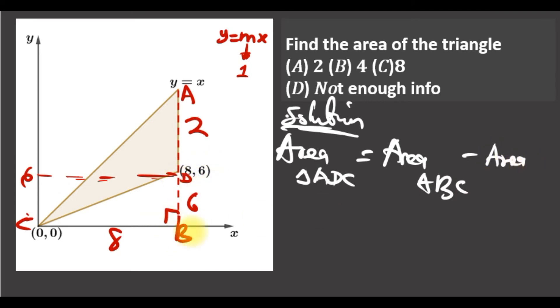And we know area of a triangle is half base times height, so you have half, the base is 8, the height is 8, minus the base here is 8, the height is 6.